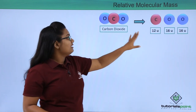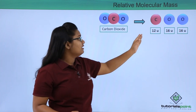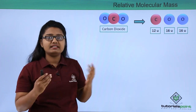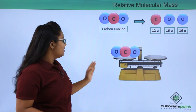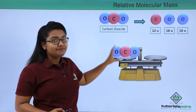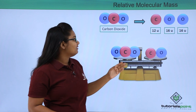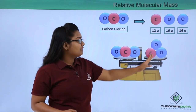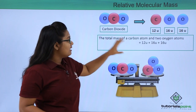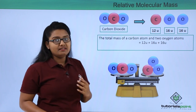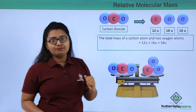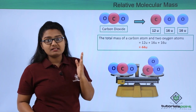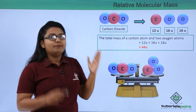A carbon dioxide molecule has one carbon atom and two oxygen atoms. The carbon atom has a relative atomic mass of 12u and each oxygen atom is 16u. The mass of the whole carbon dioxide molecule equals the sum of the masses of its three constituent atoms: 12u + 16u + 16u, which adds up to 44u.